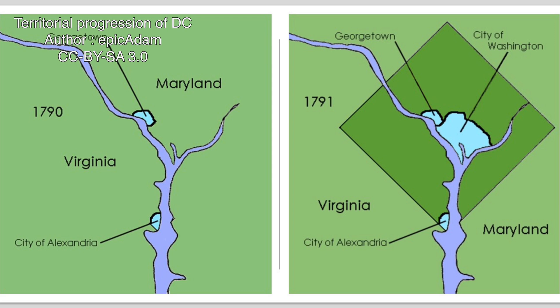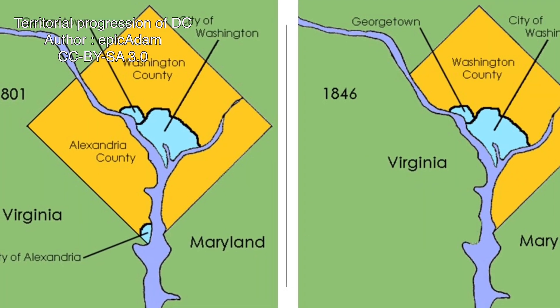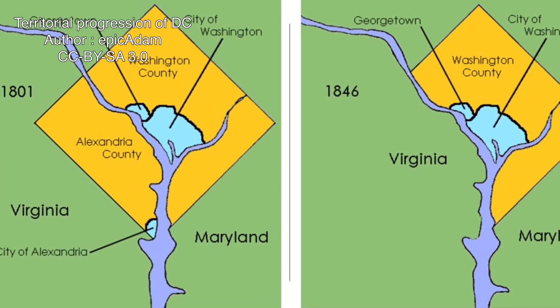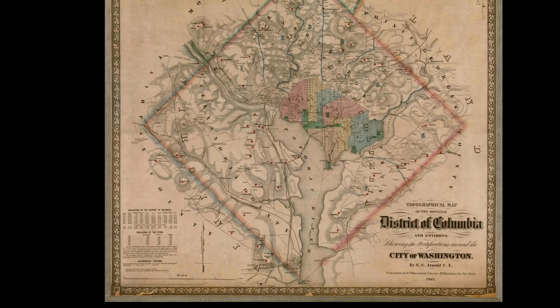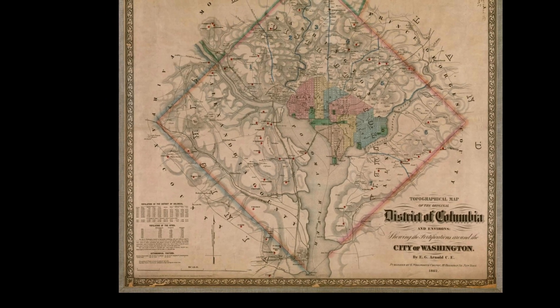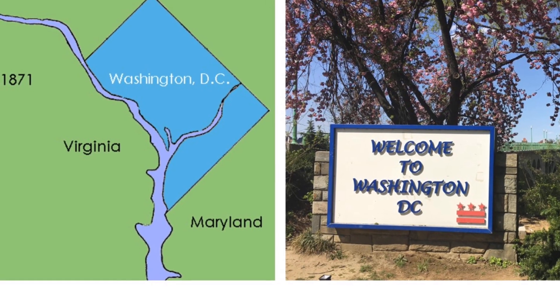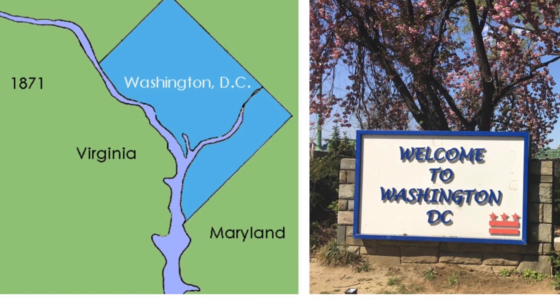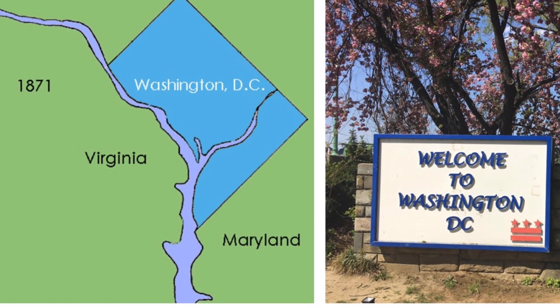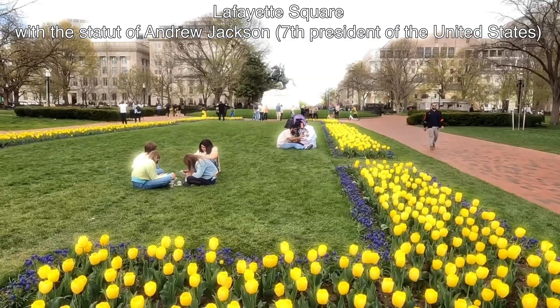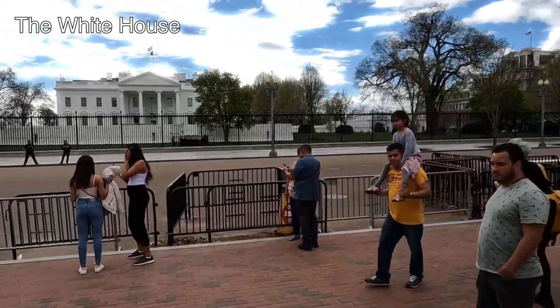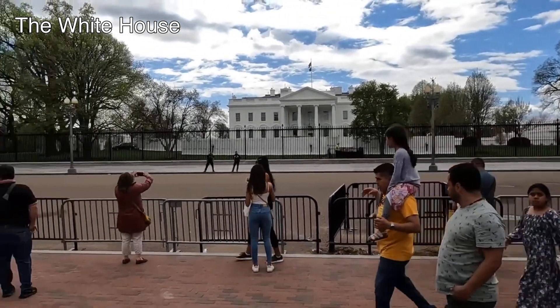On July 4, 1776, in the midst of the War of Independence against the Kingdom of Great Britain, 13 American colonies declared their independence and officially became the United States of America. These 13 colonies — Virginia, Massachusetts, New Hampshire, Maryland, Connecticut, Rhode Island, Delaware, North Carolina, South Carolina, New Jersey, New York, Pennsylvania, and Georgia — extend over nearly 2,000 kilometers from north to south, along the Atlantic Ocean, and east of the Appalachian Mountains.